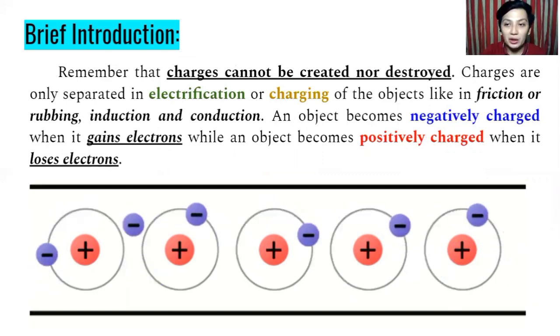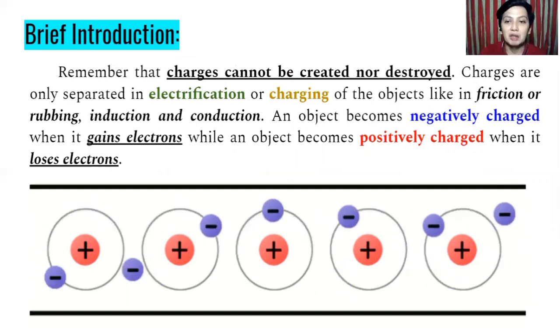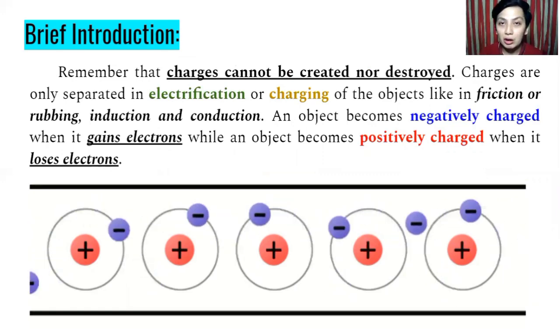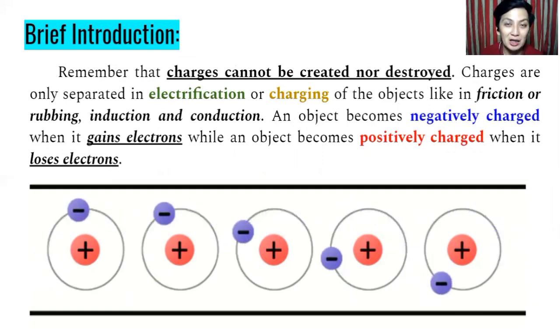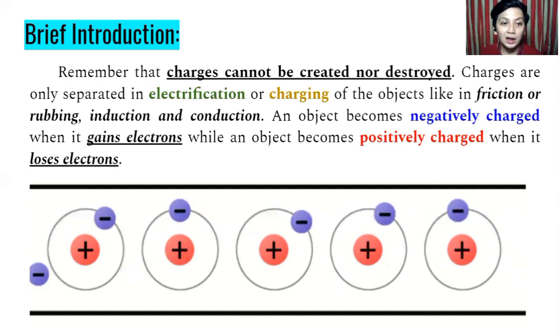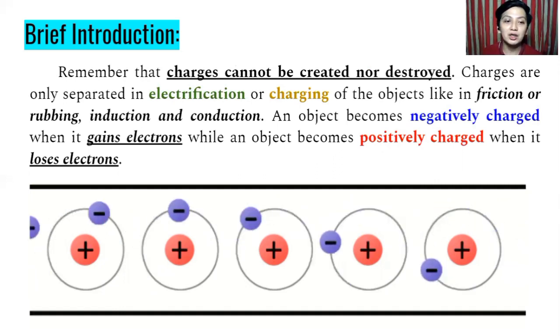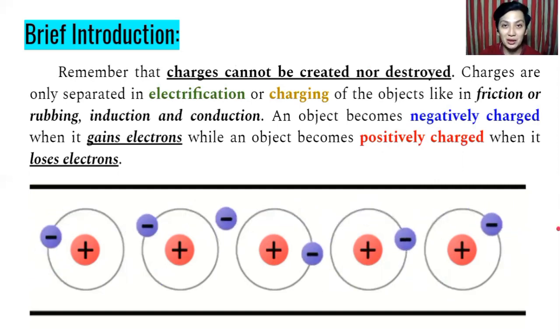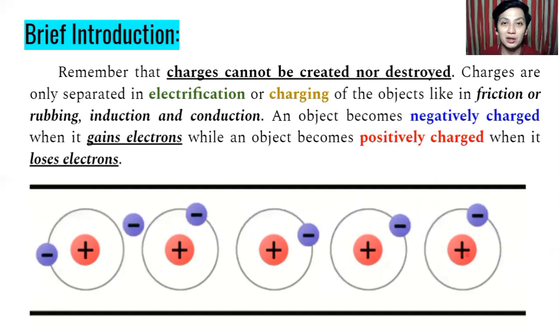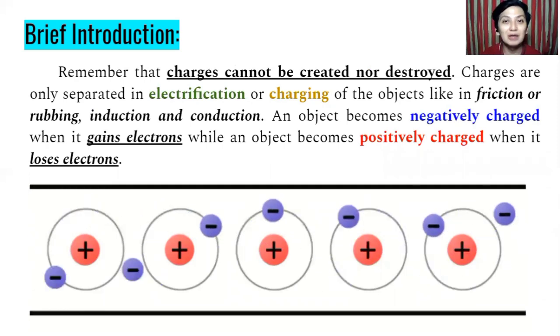So remember that charges cannot be created or destroyed. Charges are only separated in electrification or charging. So it can be electrified or electrification or charging of the objects like friction. So friction or rubbing is a type of charging as well. So another thing is induction and conduction. An object may negatively charge when it gains electrons, while an object may positively charge when it loses electrons.